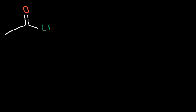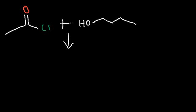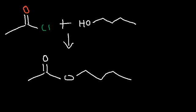Let's work on some more examples. For these examples, you don't need to show the mechanism — simply draw the major product of the reaction. So if we mix this particular acid chloride with 1-butanol, what's the product? All you need to do is take away HCl, which is the side product, and then simply connect these two portions together. We're going to get an ester with a total of six carbon atoms.